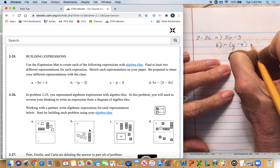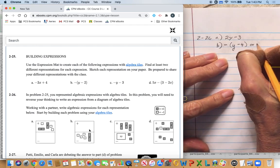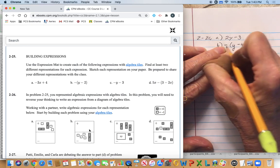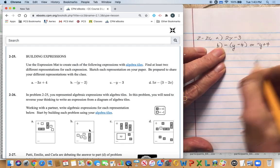So this could also be expressed as negative Y, and then these two cancel each other out and that's positive, so negative Y plus four.